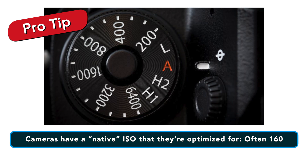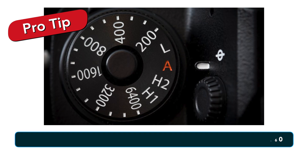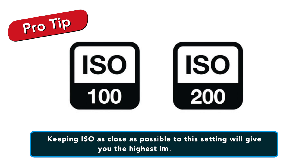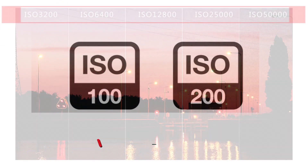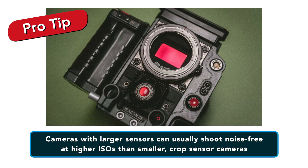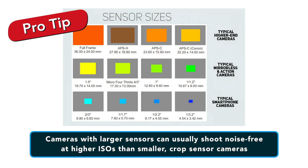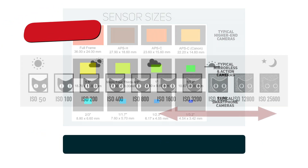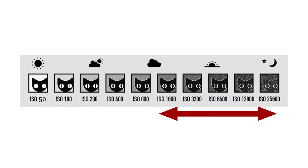Cameras have a native ISO that they're optimized for, often about 160. Keeping your ISO as close as possible to this setting will give you the highest image quality. To see how far you can deviate from this setting, do some real-world tests and examine the footage critically. Larger sensors can usually shoot noise-free at higher ISOs than smaller ones, or crop sensors as they're known — some of those cameras are fairly good even up to and beyond 1600.